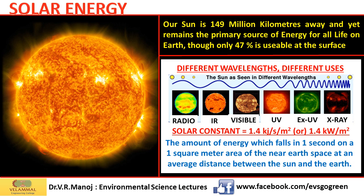Let's fast forward to now. We know that the sun is the closest star to the planet at over 149 billion kilometers. It is the light from this sun that sustains all life on earth and remains the primary source of energy. The most incredible thing is that only 47% of the total energy that hits the earth actually makes it to the surface.